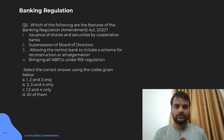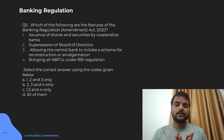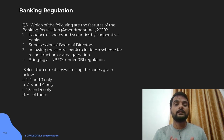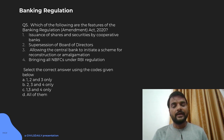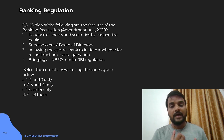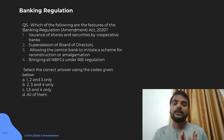Moving on to the last question on banking regulation: which of the following are features of the Banking Regulation Amendment Act 2020? We know that recently PMC Bank failed, prompting the government — along with other bank failures — to bring cooperative banks into the fold of RBI regulation. Earlier they were regulated by state governments, but now they will be regulated by the RBI itself. The first feature is issuance of shares and securities by cooperative banks, which will now be under RBI regulation on similar lines of private, commercial, or foreign banks. Supersession of board of directors — if they are inefficient or involved in corruption and have led the bank to failure, their boards of directors will be superseded by the RBI, which will govern or appoint alternative boards to manage the bank.